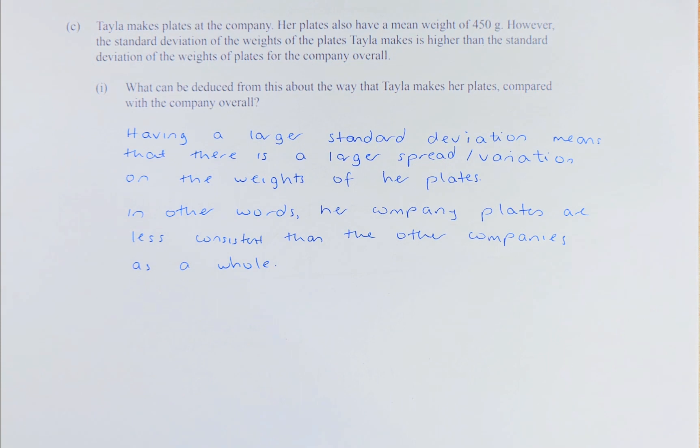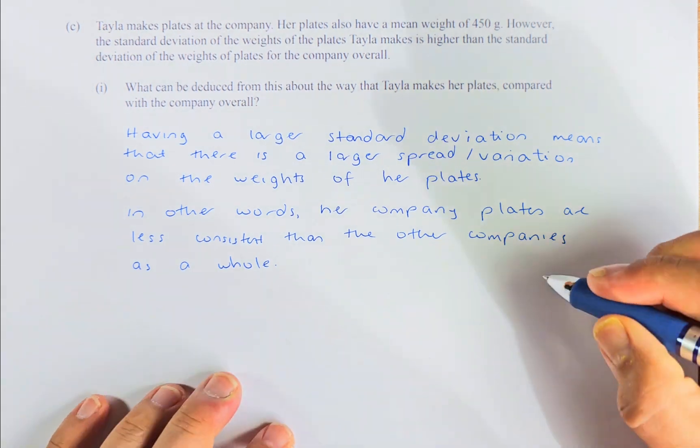You can see that the mean is the same, but her standard deviation is higher. Having a higher standard deviation means that there is a larger spread or variation on the weight of Taylor's plates compared to the overall company's plates. In other words, Taylor's company plates are less consistent than the other company's plates as a whole. If you can answer the difference between Taylor's plates and the whole company's plates, because she has a bigger standard deviation, that will give you a merit.